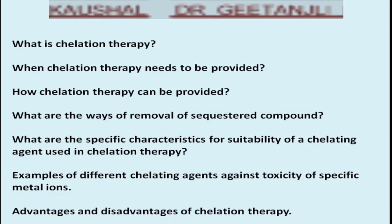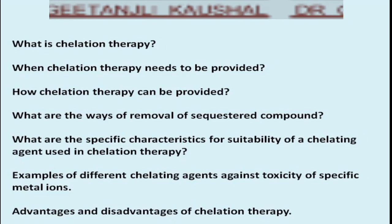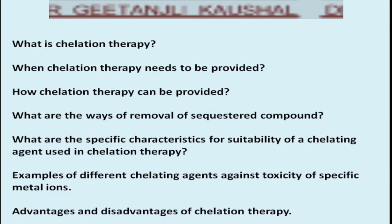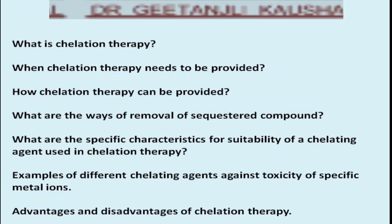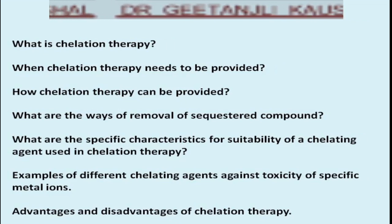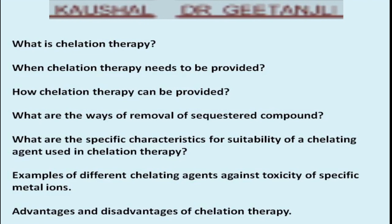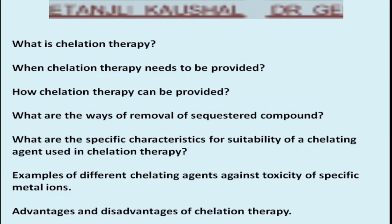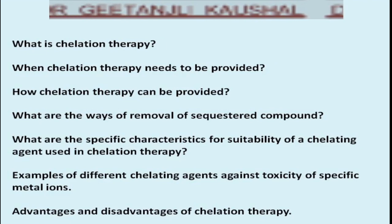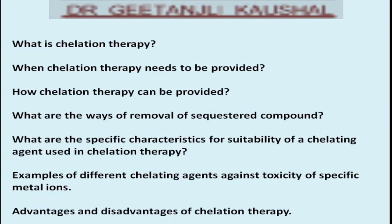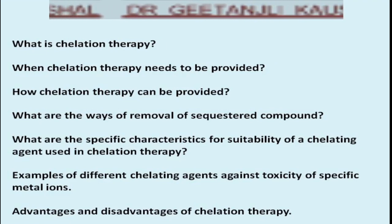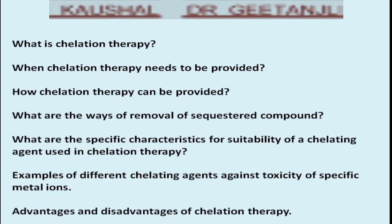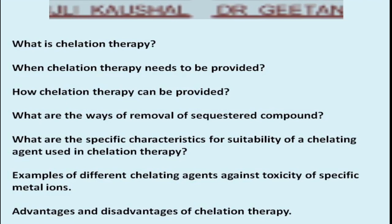This is the first question answered: what is chelation therapy? Such complexing agents sequester the metal ion, and the resulting metal-ion complex is then excreted from the bloodstream of living systems — either by means of urine through the kidney, or along with feces through the liver. So these are the ways of removal of the sequestered compound.